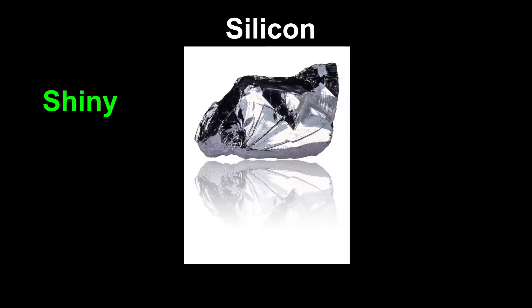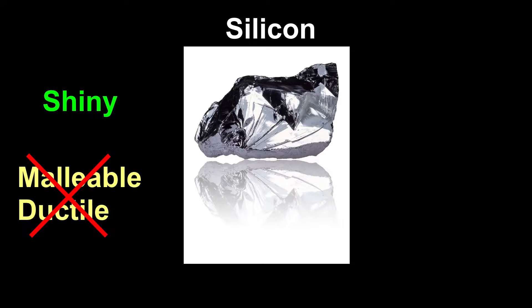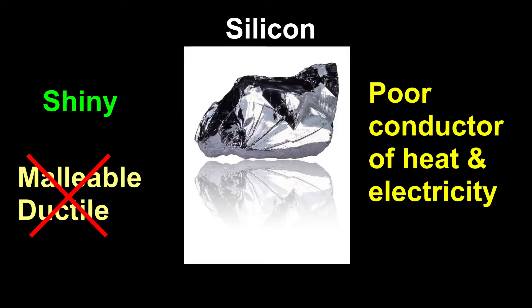Some metalloids have a lustrous look. For example, silicon is a shiny material. It is neither malleable nor ductile, and is a much poorer conductor of heat and electricity than metals.